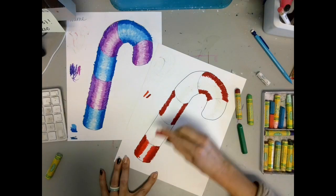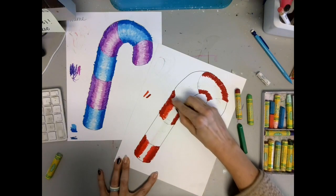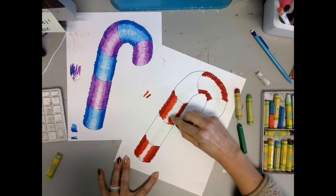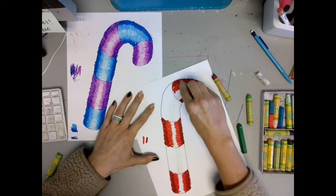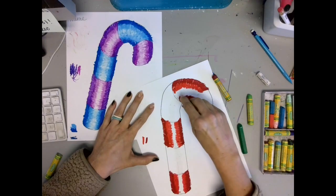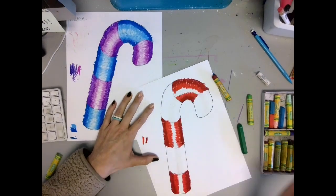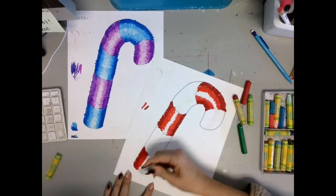Lastly it's time to grab your white, make sure it's nice and clean, and blend, blend, blend the inside of those sections on your candy cane.